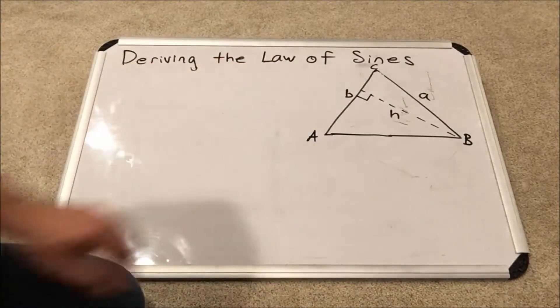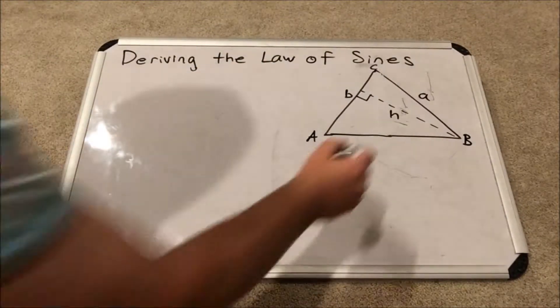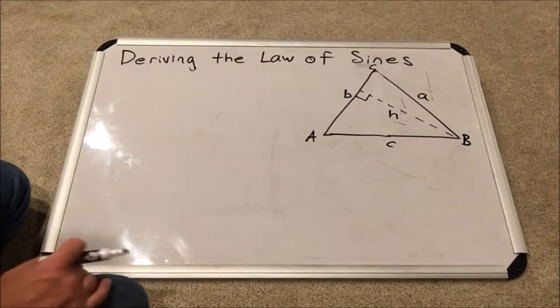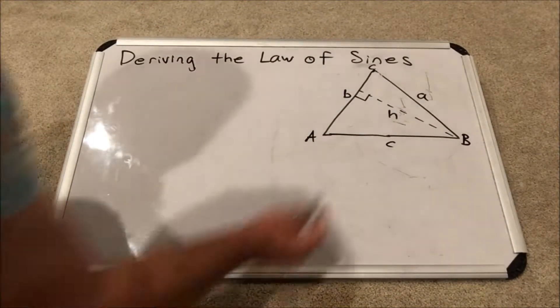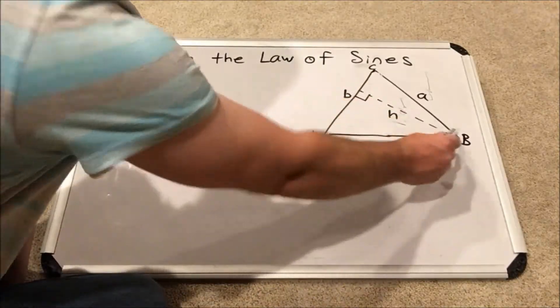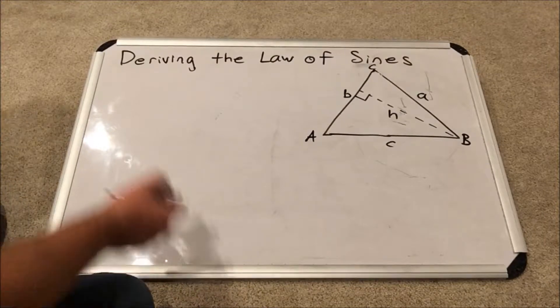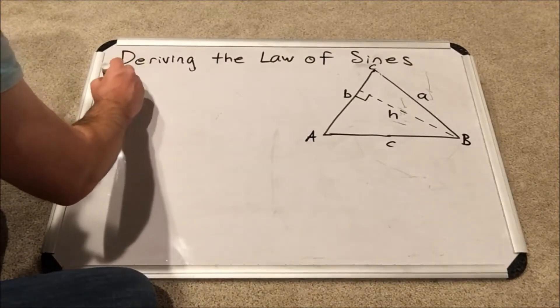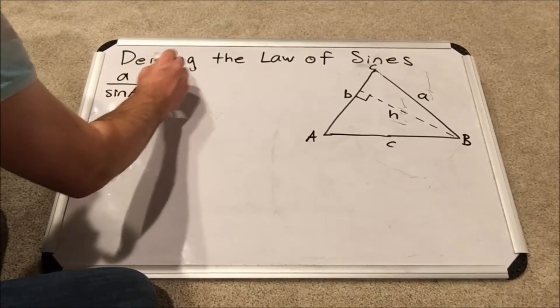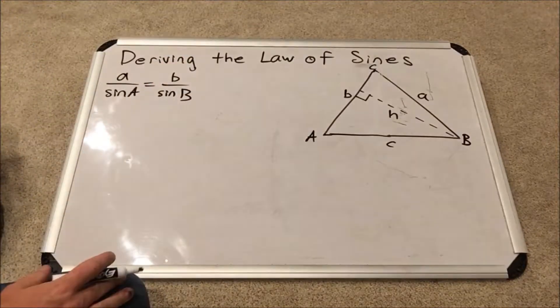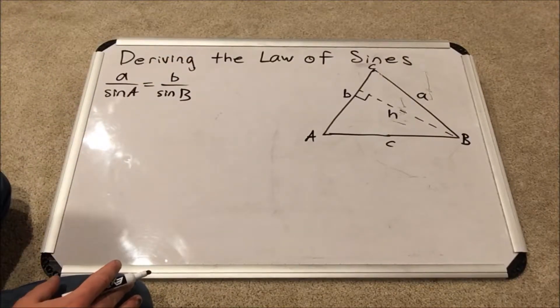As you can see, I've made an interesting tweak to my original triangle. All of the sides and angles are still labeled the same, but I've drawn a different altitude. I've drawn the altitude this time from side B to angle B, but I've still called it H. Now remember, we've already proved that A over sine angle A equals B over sine angle B.